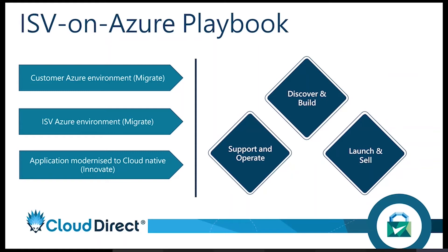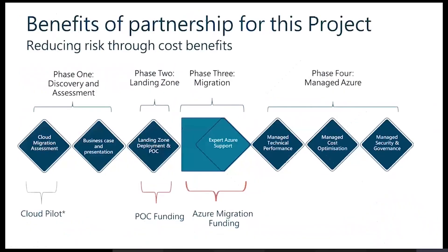The three elements of the modernization journey — discovering and building your application with Azure, launching and selling it, and supporting and operating it — are the three pillars we support. This slide goes through an example of how we do that: a process of discovery and assessment, then building and deploying your landing zone and migration, and from an operating perspective, managed Azure solutions with specialization in optimization — optimizing technical performance, costs, and security and governance.